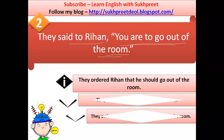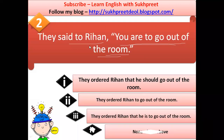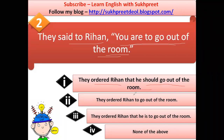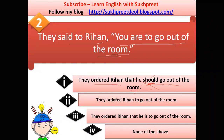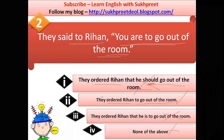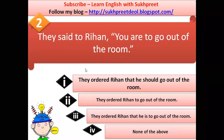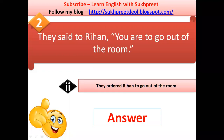The options are: first, 'they ordered Rehan that he should go out of the room' — this is wrong, because for an order, 'it is to be done' or 'it must be done.' Second, 'they ordered Rehan to go out of the room' — this is correct. Third, 'they ordered Rehan that he is to go out' — wrong. Fourth, 'none of the above' — wrong. The second option is correct. Notice no conjunction is used; the sentence is joined using 'to.'